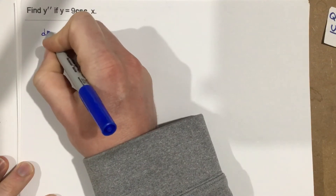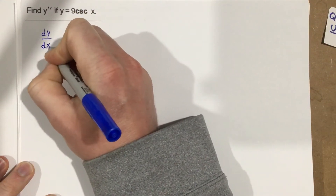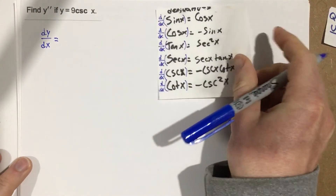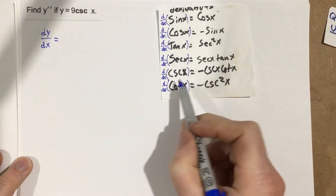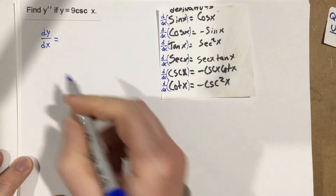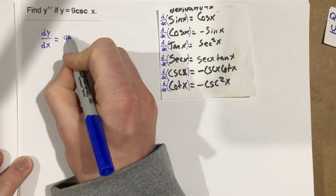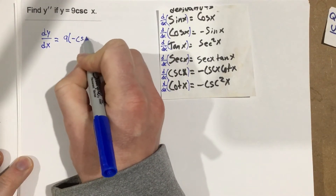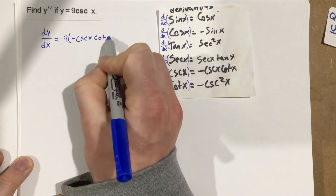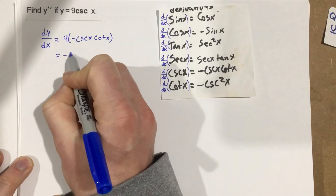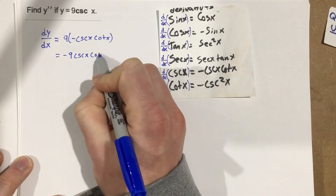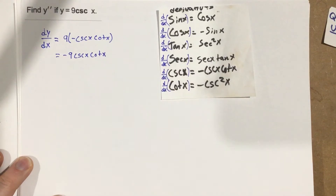We can say that dy over dx is equal to — this is just 9 cosecant x, so all we need to know is the derivative of cosecant. The derivative of cosecant is negative cosecant x cotangent x. So we can say that this is 9 times negative cosecant x cotangent x, which equals negative 9 cosecant x cotangent x. So that's the first derivative.